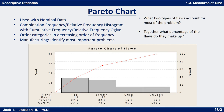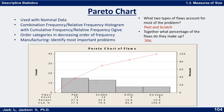Let's see if you can answer these questions looking at this chart. Which two types of flaws account for most of the problem, and together what percentage of the flaws do they make up? Press pause if you need to. Well, peel and scratch are the two biggest ones — the first two bars. Together they make up 70% of the problem. So if we can focus our attention on fixing the peels and scratches, we will have taken care of 70% of our defect problem.